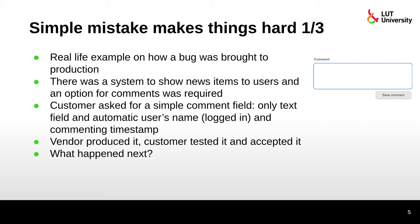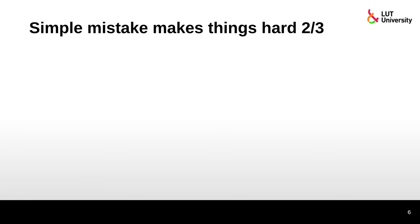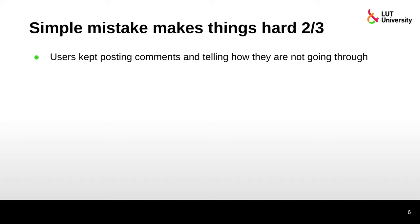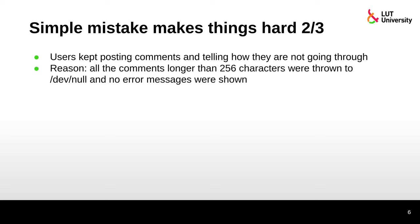The idea was simple: a comment field with just a save button. What happened next? Users kept posting comments and reporting that they were not going through. They would write a comment, press save, and nothing happened — no comment appeared on the news item page. The reason was that all comments longer than 256 characters were silently discarded, with no error messages shown at all.